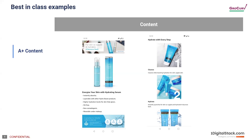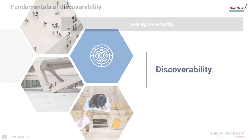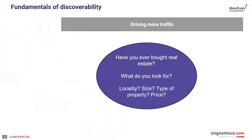Now we move to the more complicated topic of discoverability. Imagine you have to buy real estate — you look at locality, size, type of property, price. If your objective is to open a shop, you want to be close to people who'll visit your shop, have parking access, and visibility for your board. Consider Amazon as a big city and you're looking to buy a shop in that city — that's the analogy that explains discoverability well.